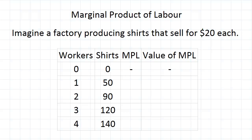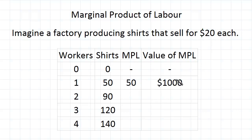But what happens if we add one more worker? When we go from zero workers to one worker, we go from having zero shirts produced to 50 shirts produced — an increase of 50 shirts. So we get a marginal productive labour of 50, and the value of this at $20 per shirt is $1,000.